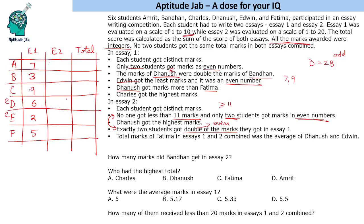If we consider who can double their SA1 marks: Amrit would get 14, Bandhan 6 — not possible since minimum is 11. Edwin's double is 4 — not possible. Fatima's double is 10 — not possible. Dhanush got the highest marks so Dhanush cannot be one of the doublers. So only Amrit (14) and Charles (18) can double their marks. Dhanush got the highest, so Dhanush must get 19 or 20 marks; since there are 2 even spots taken, Dhanush gets 19.